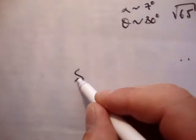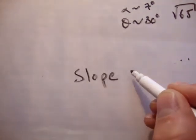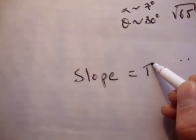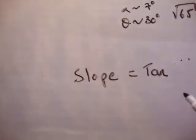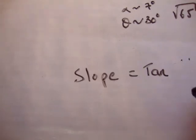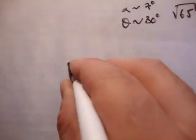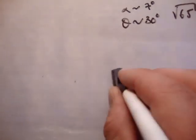To summarize: slope equals tan. There are a lot of different reasons as to why that is the case. If you want to find those out and my video on slope doesn't cover everything, just put a comment in the video or email me and I'll do a more detailed one.